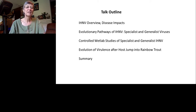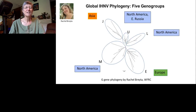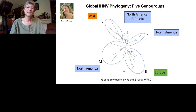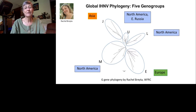IHNV occurs globally as one of five different genogroups. There are three genogroups in North America — U, L, and M — which is where the virus was first detected and believed to be originally endemic. The U virus also occurs in eastern Russia. The J genogroup is in Asia and the E genogroup is found in Europe. So the virus is pretty much distributed across the northern hemisphere.